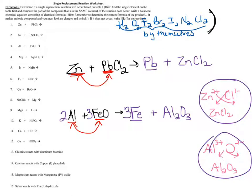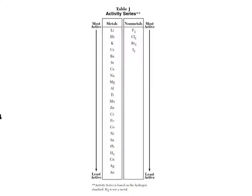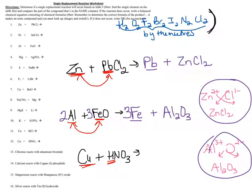Let's take a moment and look at number 12: Cu reacting with HNO3, which is nitric acid. I find the single element Cu on reference table J and compare it to the part of the compound in the same column, which is H. Here's Cu on the table. Is Cu higher than H? No, it's not. So this one will not react — these will not switch places. There is no reaction to write.